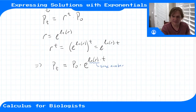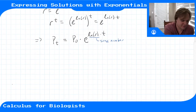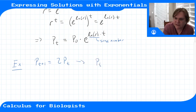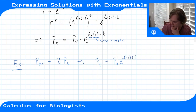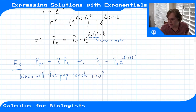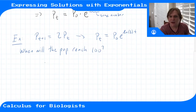Now that it's in this form, we can ask more specific questions. Let's do an example: say we have the system p(t+1) = 2·p(t) — the population is doubling every hour. In this case we have p(t) = p-naught times e to the ln(2) times t. We can ask: when will the population reach 100, given that the initial population is 1?